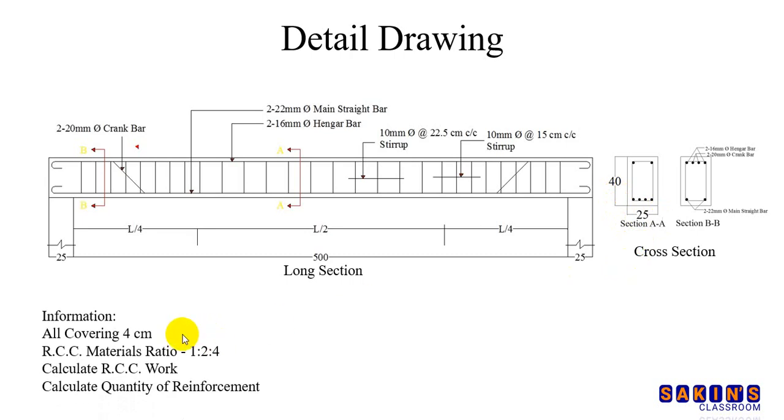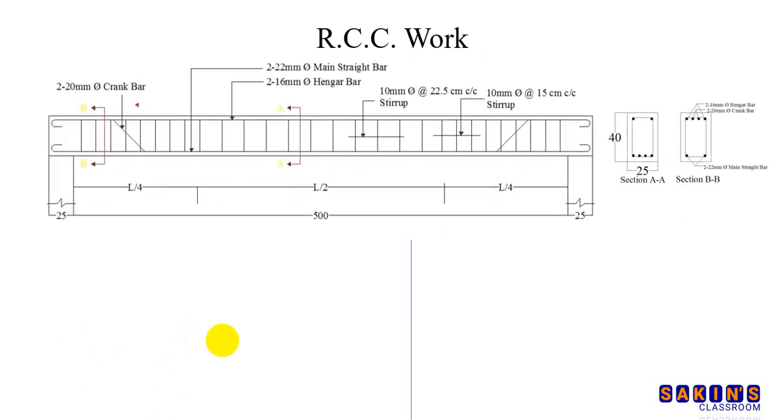Circle covering is 4cm. RCC material ratio 1 is to 2 is to 4. Now, this is the beam. Total RCC work. I can calculate the material. Total quantity of reinforcement. That's how we start. First, RCC work, RCC cast.